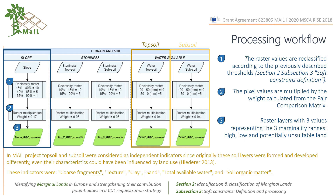It may be the case that for the same indicator there is information from the topsoil and the subsoil. In the main project, they were considered as independent indicators since originally these soil layers were formed and developed differently, and their characteristics could have been influenced by land use. These indicators with topsoil and subsoil were called texture, clay-sand, available water, and soil organic matter.